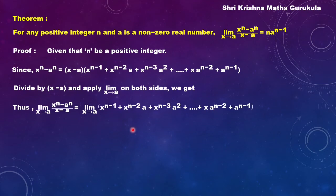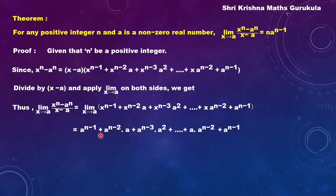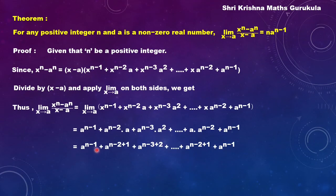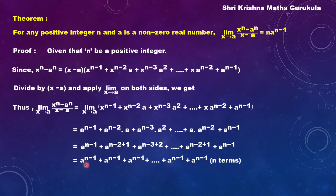Now this right-hand side is a polynomial — it does not take any indeterminate form, so we apply the limit directly by substituting x equals a. This gives a to the power n minus 1 plus a to the power n minus 2 into a plus a to the power n minus 3 into a squared, and so on. Since the bases are the same, we add the indices, so every term becomes a to the power n minus 1. There are n such terms in total, giving n into a to the power n minus 1. This is the proof for positive integers.